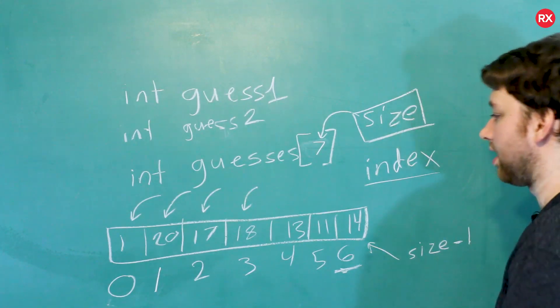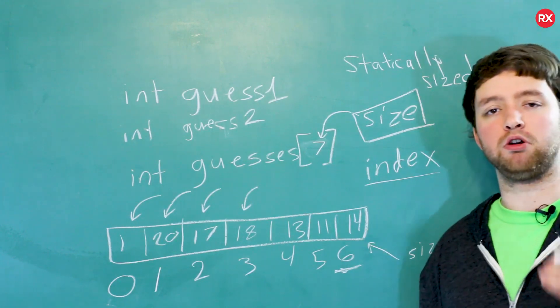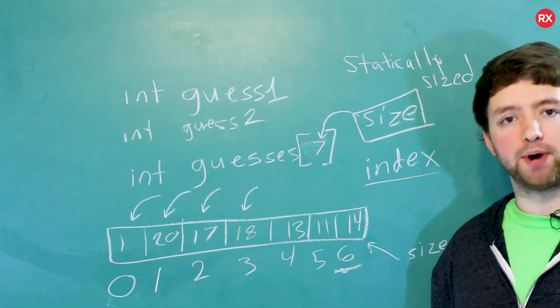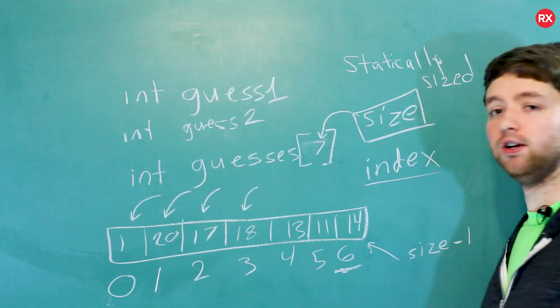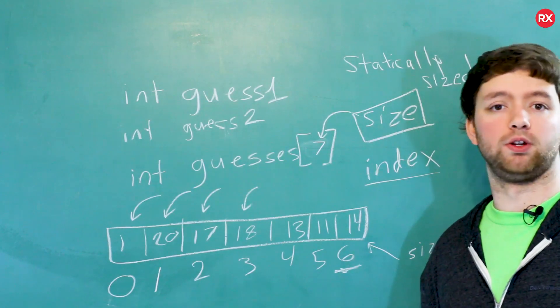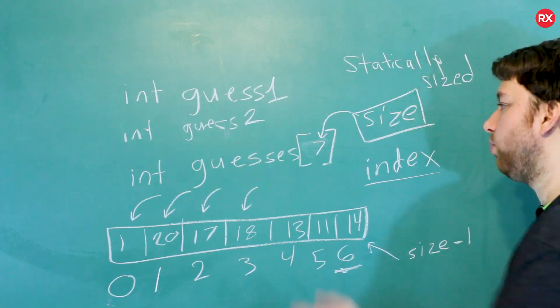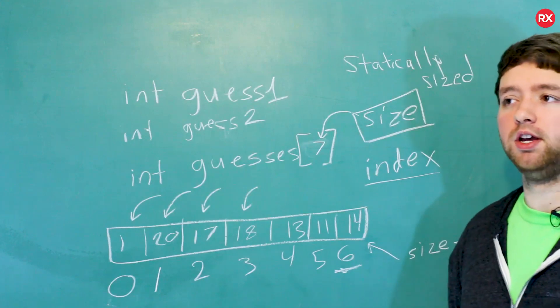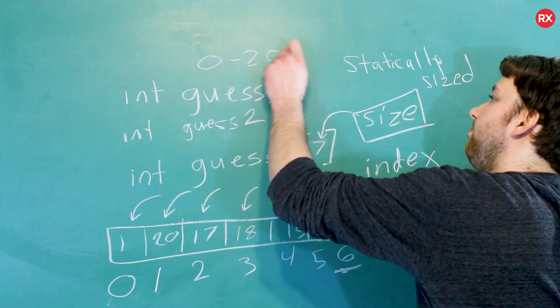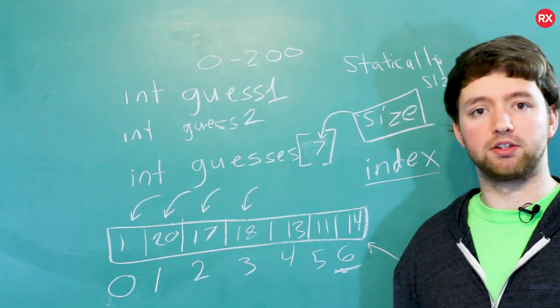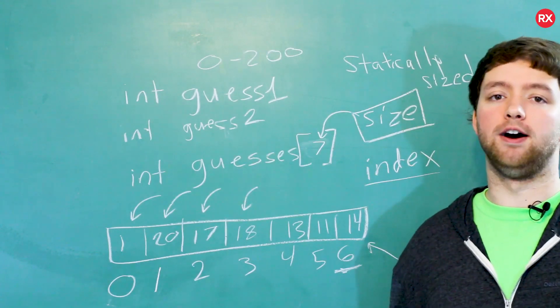The thing with the arrays that you need to understand is that they are statically sized. What does that mean? It means the size is determined when you code out the application, at compile time. So when you compile your code, the size is set. So that means if you put a seven here, that's as much storage as you're going to get for that array. The downside to this is you might not know how much storage you need ahead of time. In the situation of guesses, you probably are going to know, because you might have a random number from zero to 200, for example.